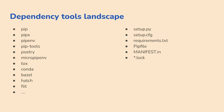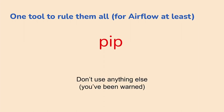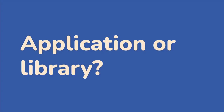Managing dependencies in Python can be done in many ways with different tools. In Airflow we only use one: pip. If you use anything else, you've been warned — because pip has some features, especially constraint support, that allow you to tackle the dependency problem better than other tools.